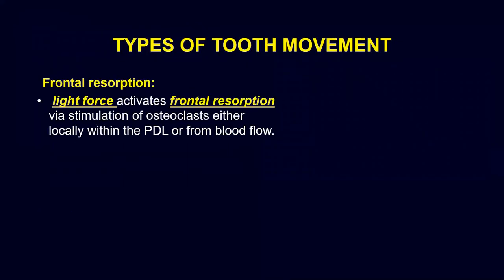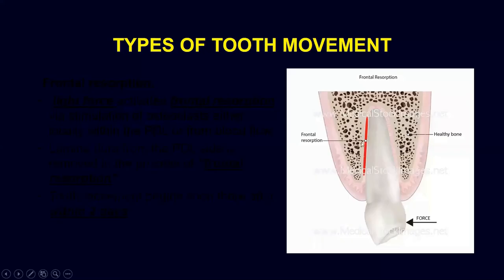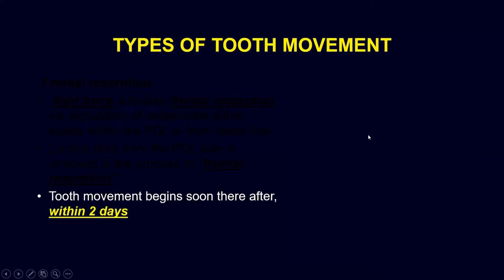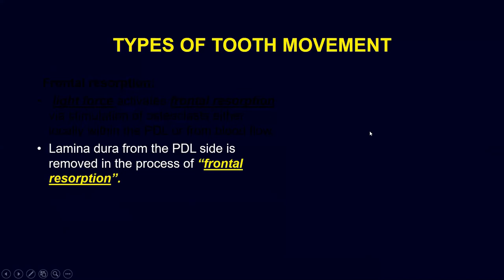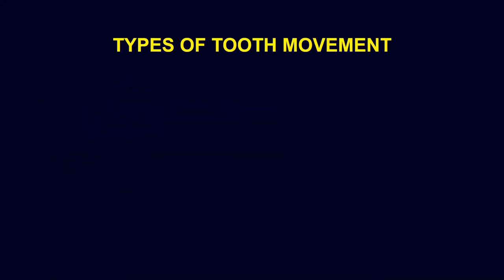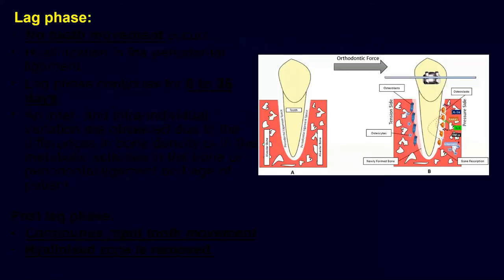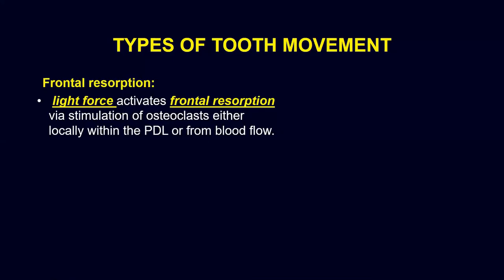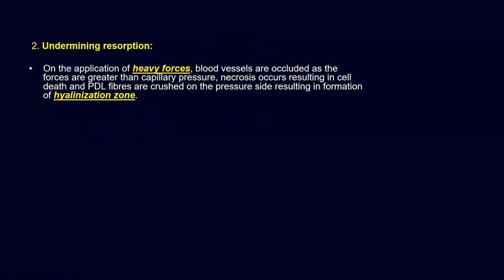Within two days, if the bone resorption is occurring on the PDL side — this is the PDL and this is the lamina dura — if bone resorption is carried out from the PDL side, this is called frontal resorption. This normally takes two days to get activated, and in this phase the lamina dura is removed from the PDL side. You need almost two days for the activation of the cells.